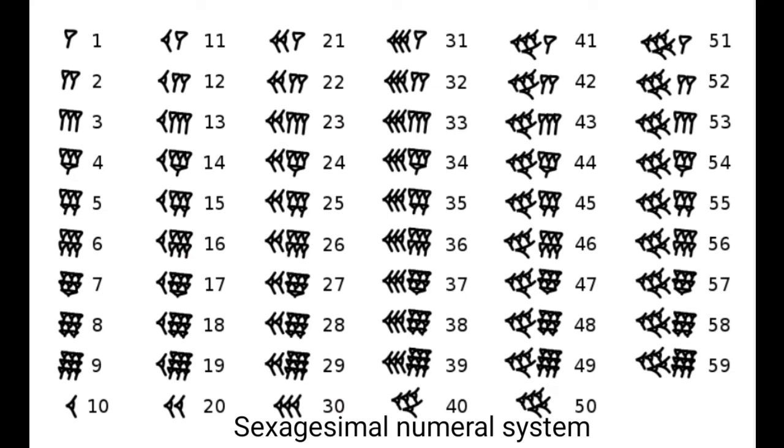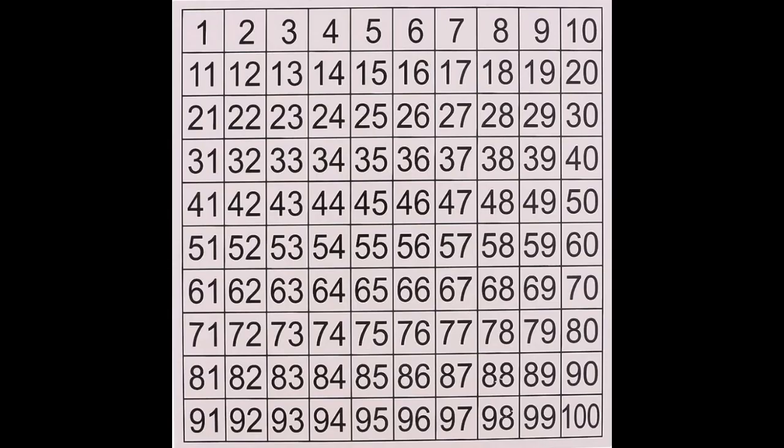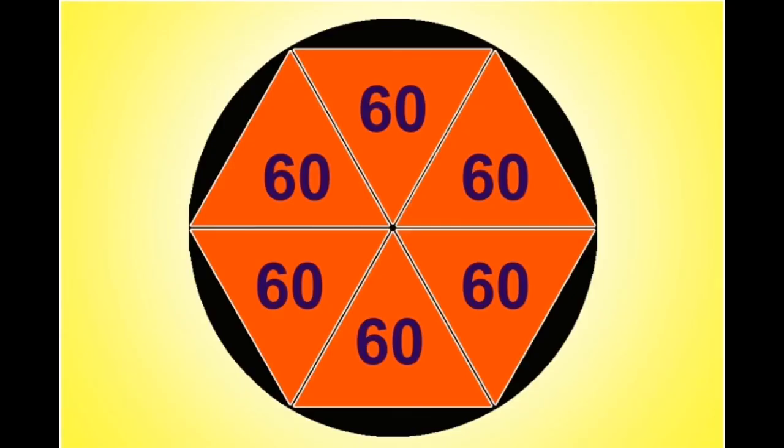Number three: historical reasons. The Sumerians and Babylonians were known to use the sexagesimal numeral system. The sexagesimal system has a base value of 60, whereas the current system we use is the decimal system with a base value of 10. Once we reach the tenth number, we start repeating the symbols to form new numbers.